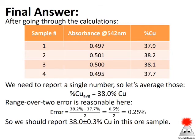And here's where we've got the error treatment coming in. For this type of a data set, range over two error is fine. So the highest value minus the lowest value divided by two gives me an error of 0.25. I'm going to round that to a single digit, and then I'm going to round this number to the same digit. So this should be reported as 38.0 plus or minus 0.3% copper in this ore sample.